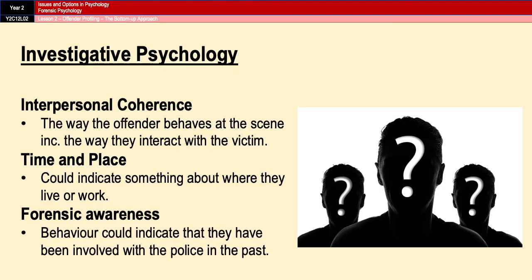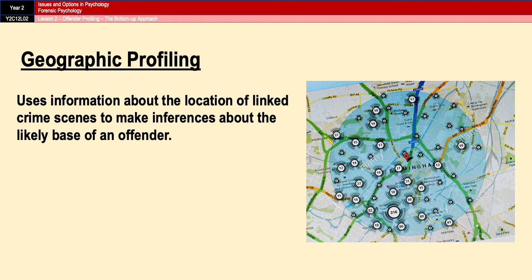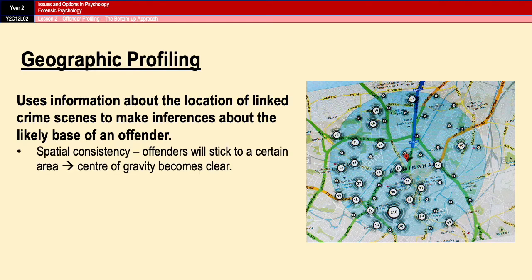Investigative psychology, amongst other things, looks at those three elements as part of an investigation. Another method used in the bottom-up approach is geographical profiling. This method uses information about the location of linked crime scenes to make inferences about the likely home or operational base of an offender. It's based on the idea of spatial consistency, which suggests that serial offenders will restrict their activity to geographical areas that they're familiar with.